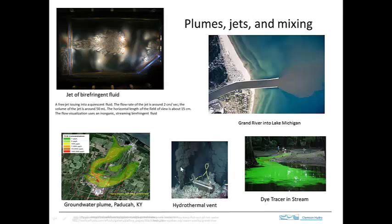You can also see various structures within the plume that are turbulent vortices over a wide range of scales that are tending to mix the plume. This mixing process is really at the heart of dispersion. Here's another case where people put dye tracer in a stream, and you can see it creates quite a striking color. It flows down with the water and then it spreads out.